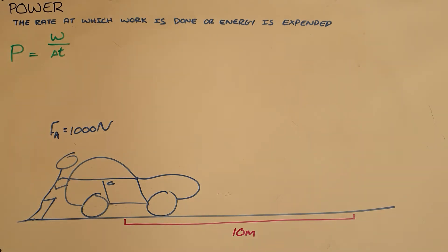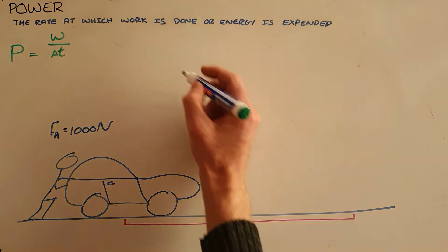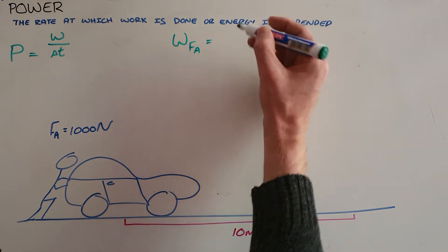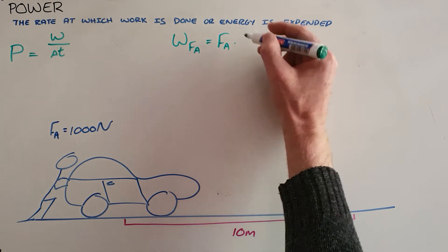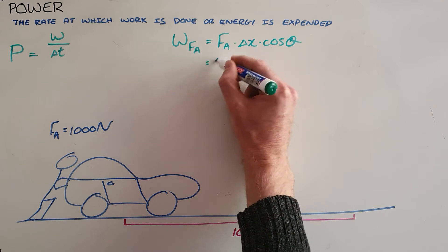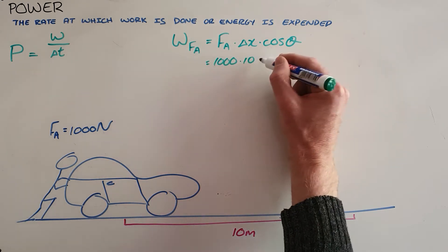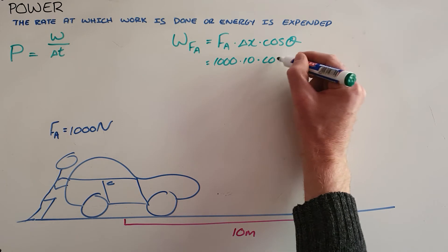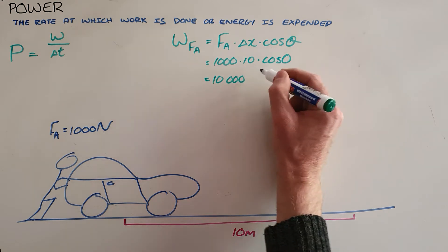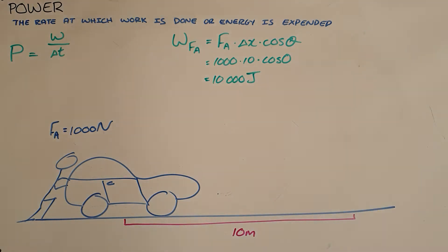We can demonstrate the difference between work and power with a very simple example. Here, a person has applied a 1000 N force to push a car a distance of 10 meters. Using the formula for work — force times displacement times the cosine of the angle between the two — with the force and displacement in the same direction, this applied force has done 10,000 joules of work.